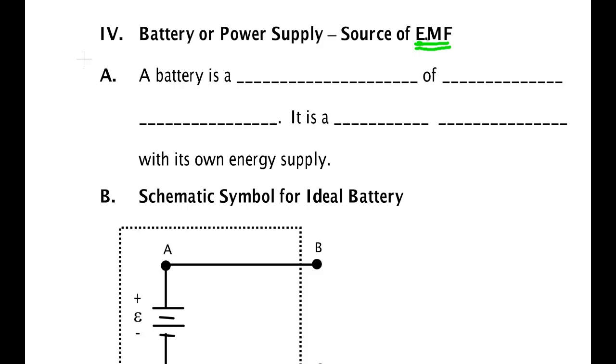So a battery is a source of electrical potential, a source of voltage. It is simply a power supply, but unlike power supplies that you plug in the wall and get their energy from the power plant, this power supply has its own energy supply from the chemistry inside the battery.